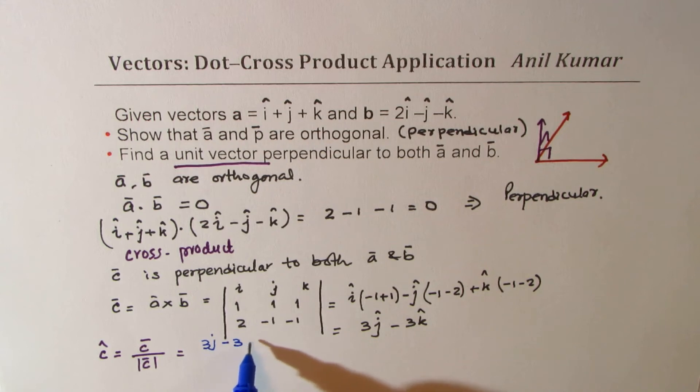Divided by square root of 3 squared plus 3 squared plus (-3) squared. So that gives you the unit vector, which is 9 plus 9 is 18, square root of 18 is 3 square root 2.